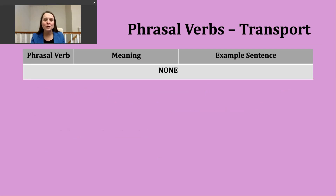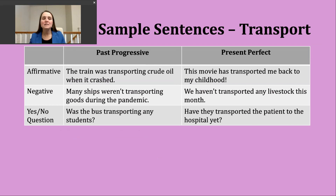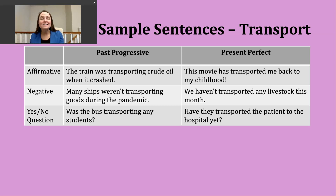There aren't any additional phrasal verbs to discuss, so instead we can focus on using our verb of the day in a couple different verb tenses. Today we're going to practice the past progressive and the present perfect. The two P's in 'past progressive' can help me remember how many parts I need to form this verb. It's really common to use the past progressive to describe an action that was ongoing during some period of time in the past.